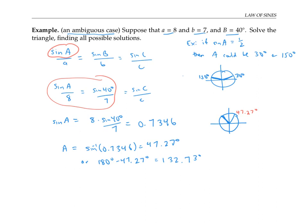I'll sketch the possible triangles. In both triangles, side length a and b are the same, and angle B is the same, but everything else is different. We can continue to solve for the other angle and side in each case.